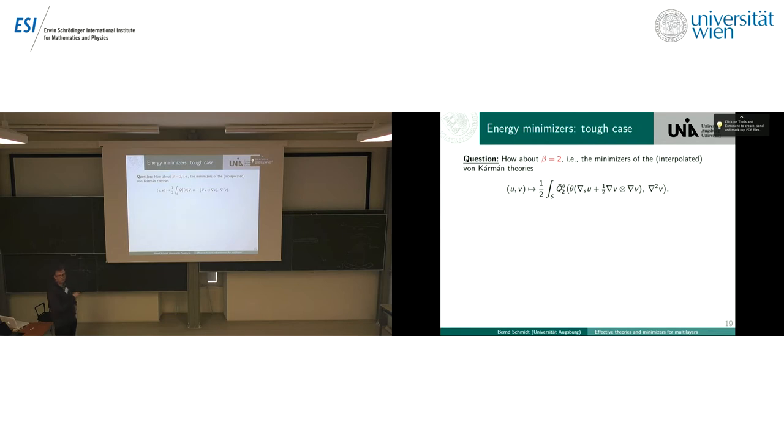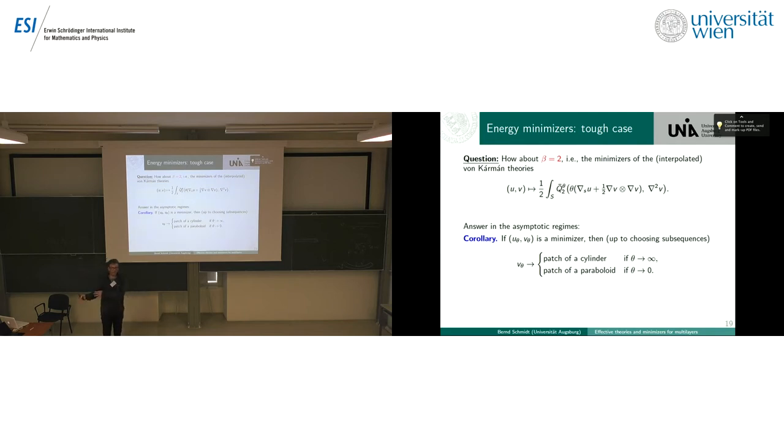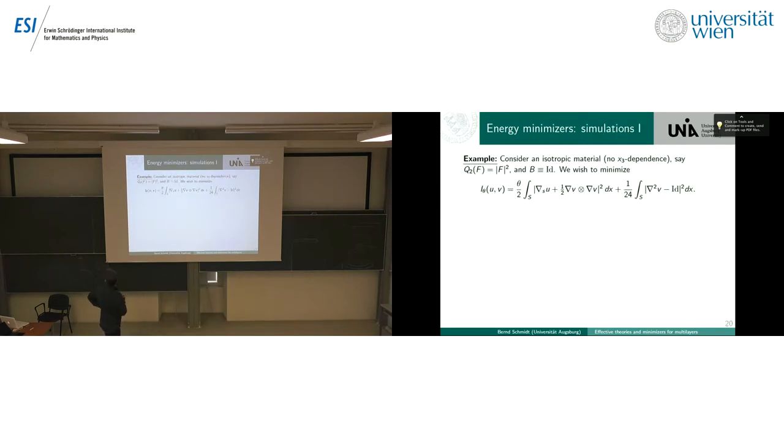Now the challenging question would be to know what are the minimizers of this interpolating regime. I don't really know. I mean, we know something. So what we know is, of course, by gamma convergence, since these guys gamma converge for theta equal to zero and theta equal to one, if I let theta equal to infinity, they have to go to a minimizer of linearized Kirchhoff, which is a linearized cylinder, and if I converge to theta equals zero, they have to go to a non-degenerate paraboloid. But what happens in between? So let's look at a very special case, and the very special case is, so if you have, in a very specific situation, our functional reduces like this.